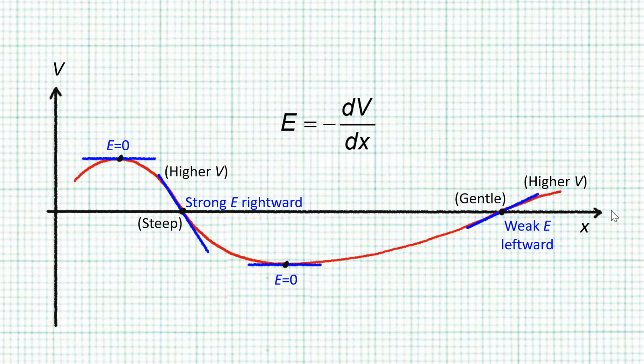This time, the steepness of the slope tells us the magnitude of the electric field, and the field is always in opposite direction to increasing potential.